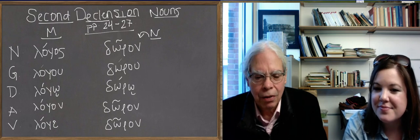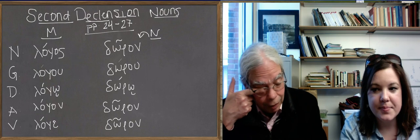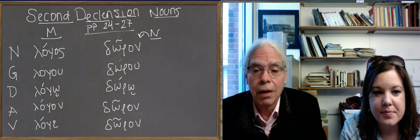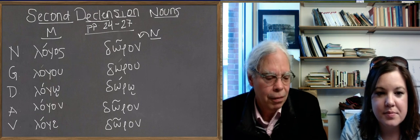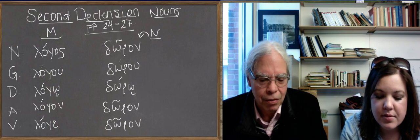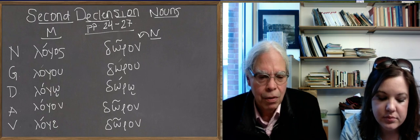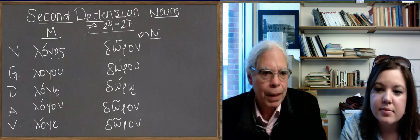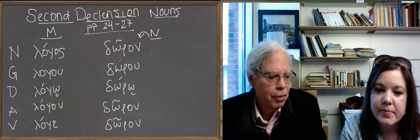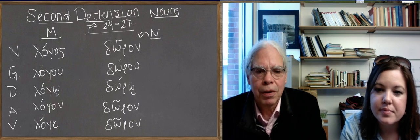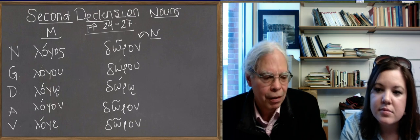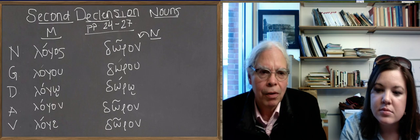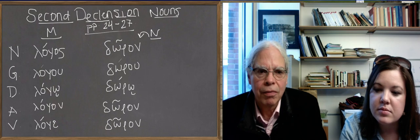Originally, in Indo-European, the language from which Greek is a descendant, there was no masculine and feminine distinction. The basic distinction was between animate and inanimate.